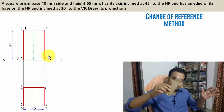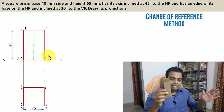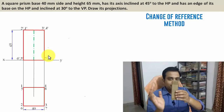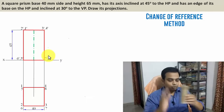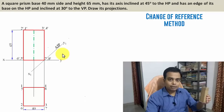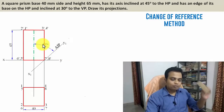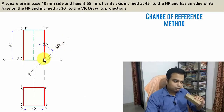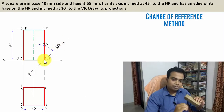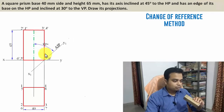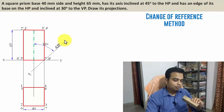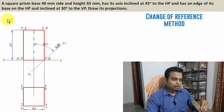In the change of reference method, we don't change the position of the solid. Instead, we have an auxiliary inclined plane kept in such a way that it makes an angle of 45 degrees with the axis. This auxiliary inclined plane passes through edge 7 dash–8 dash, because the problem states one base edge must remain in contact with the HP, so the auxiliary plane is also in contact with that edge 7 dash–8 dash.